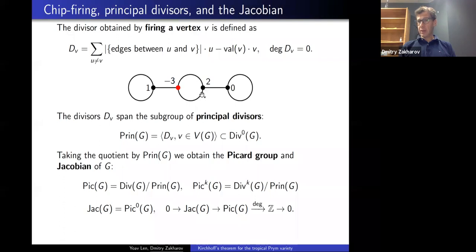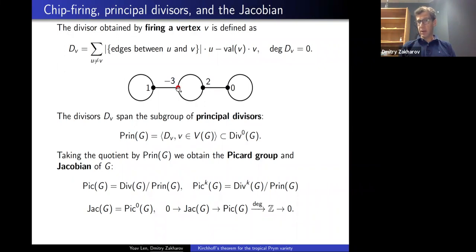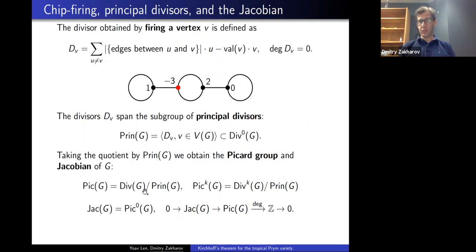In chip firing, you move a chip — a positive integer — from the fixed vertex to all neighboring vertices. If there are multiple edges between a pair of vertices, you move that many chips. The divisor obtained by firing vertex V gets one chip at a neighboring vertex, two chips at a vertex connected by two edges, and the negative of everything given away is placed at the red vertex. The degree is clearly zero. The subgroup spanned by these chip firing divisors is the group of principal divisors. The Picard group is the group of divisors modulo principal divisors, and the Jacobian group is the degree-zero Picard group.